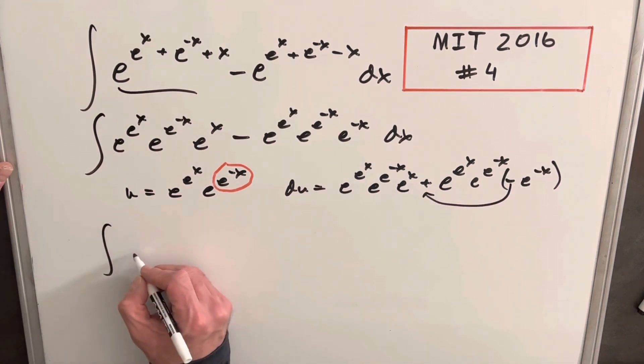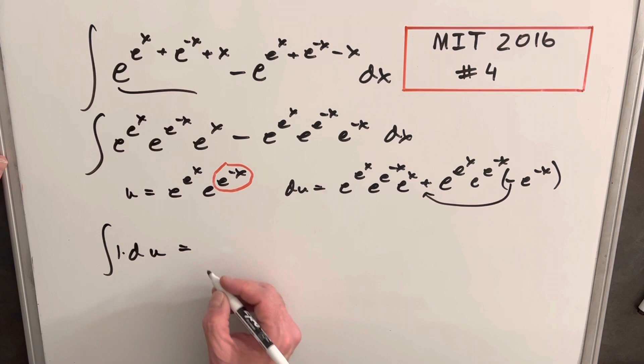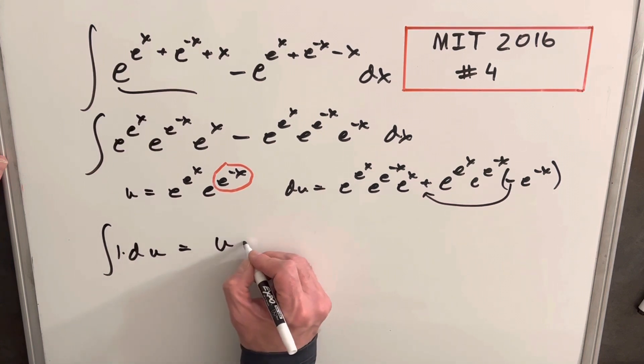So doing this, what we have is our whole thing is just going to be du, or one times du. So we're just integrating one, essentially. And what we get is u plus c.